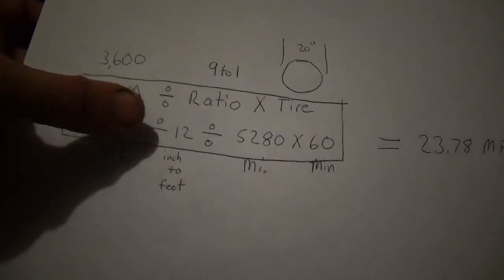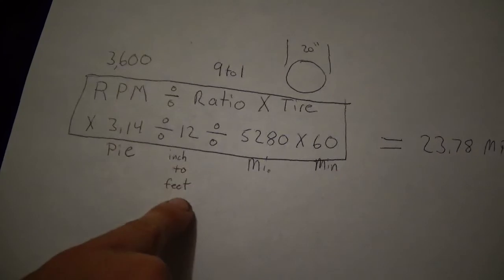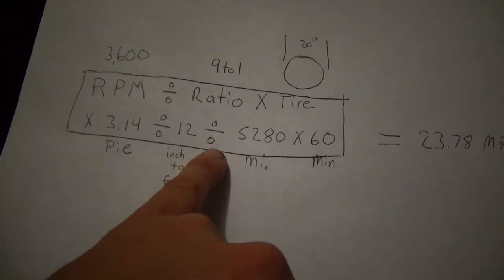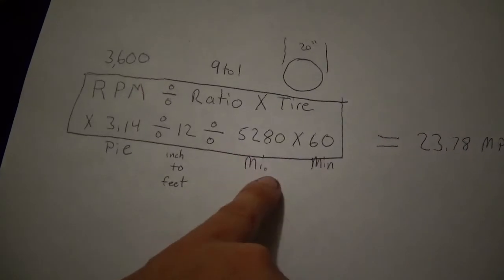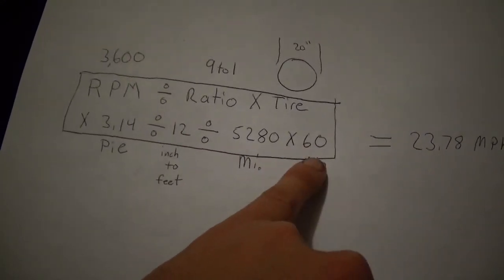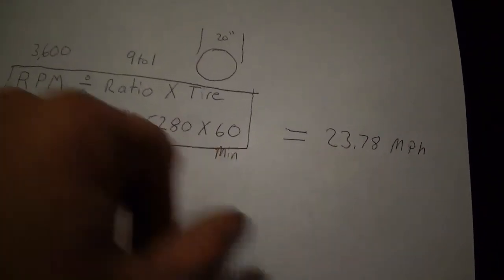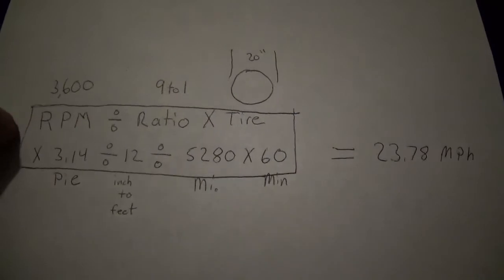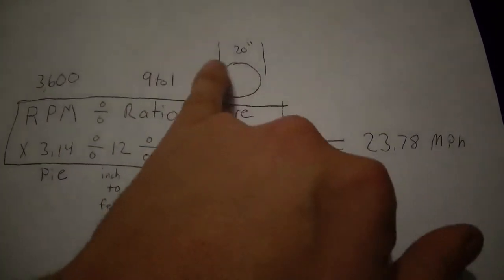Divided by 12. Now what's going on here is you're converting inches to feet. Then you divide it by 5280, which is how many feet is in a mile, and you times it by 60 minutes. Ending result is 23.78 miles per hour.